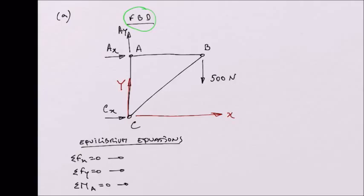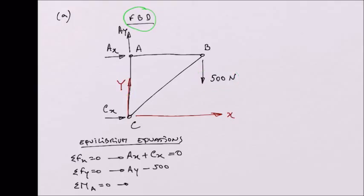Starting with the first equation, summation of forces in the x-direction equals zero: we have reaction AX and reaction CX, and that needs to equal zero. Second equation, summation of forces in the y-direction equals zero: we have reaction AY and the external load minus 500 N — negative because this force is opposite to our positive y-axis — and this equals zero.